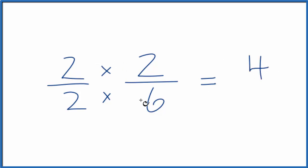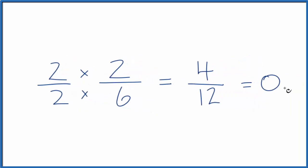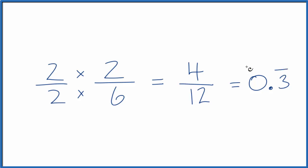2 times 2 is 4. 2 times 6, that's 12. And now we have an equivalent fraction to 2/6. If you divide 2 by 6 or 4 by 12, you end up with 0.3, and that 3 just keeps repeating for both of these equivalent fractions.